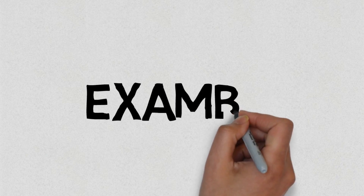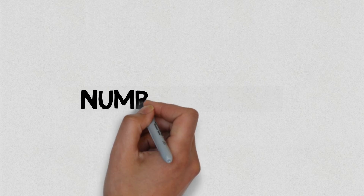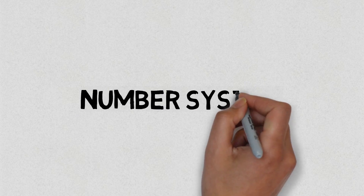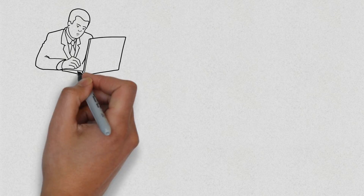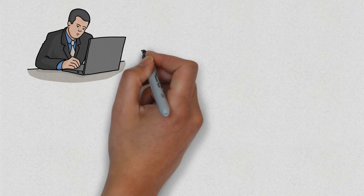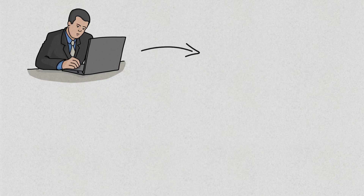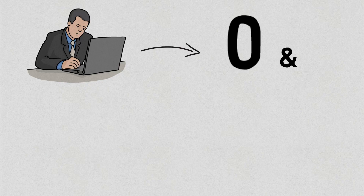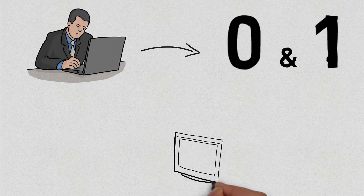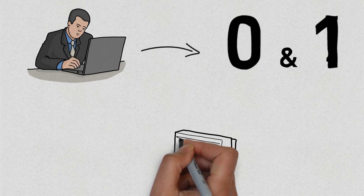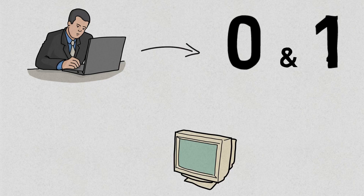Hello friends, welcome back to Exam Beans' Computer Awareness Learning Series. In this lesson, we are going to see about number systems in computers. When we type some letters or words, the computer translates them into numbers, as computers can understand only numbers. So the computer cannot understand any alphabet that you type — whatever you type will be converted into numbers.